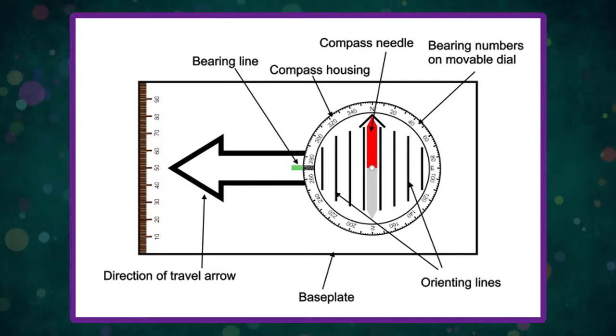The needle is mounted on a low friction pivot point. In better compasses, a jewel bearing so it can turn easily.